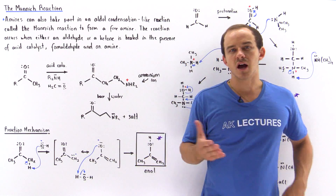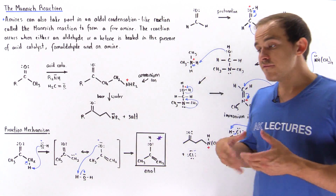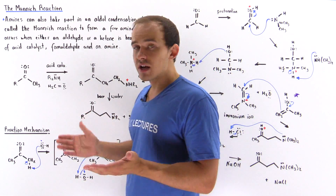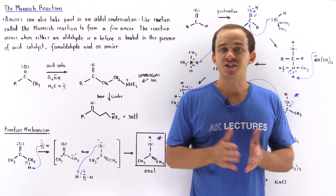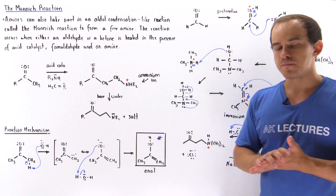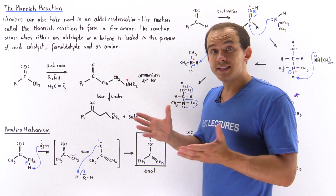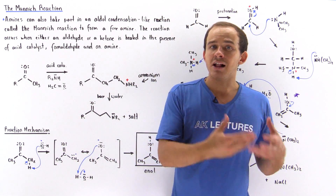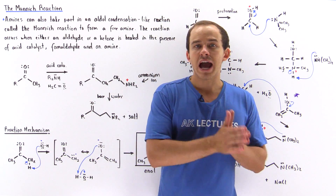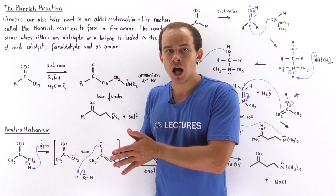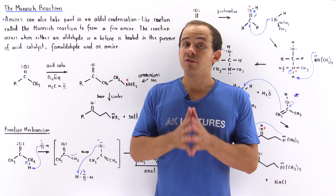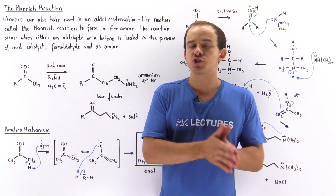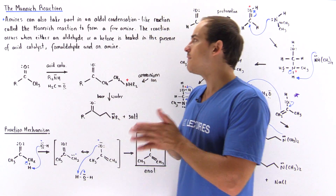In this lecture, we're going to discuss a reaction that is very much like the aldol condensation reaction discussed in the previous several lectures, known as the Mannich reaction. Secondary amines can act as nucleophiles, undergoing an aldol condensation-like reaction to produce a final product known as the free amine — which contains a carbonyl group attached to the nitrogen of that amine.